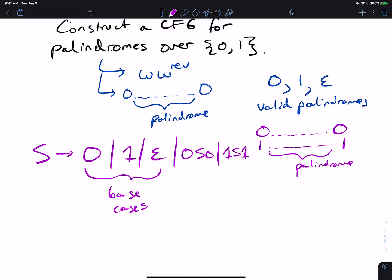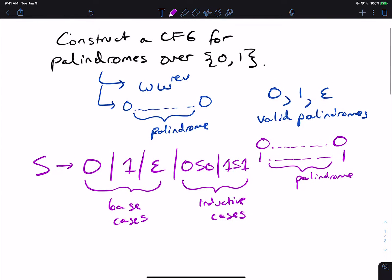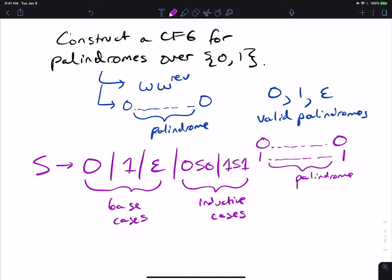Why? Well, certainly it gets all even length palindromes. So these are the inductive cases, clearly because we're recursing on the variable S here. So it gets all even length palindromes because every palindrome using these rules will generate two characters, 0 0 or 1 1. And if the palindrome is of even length, we'll eventually stop on the epsilon rule here.